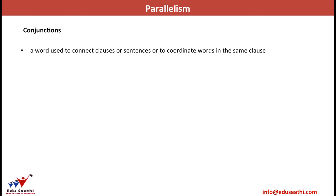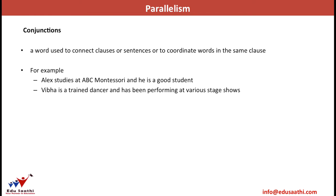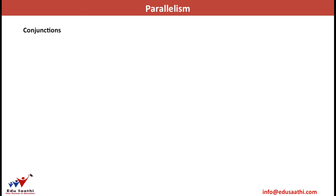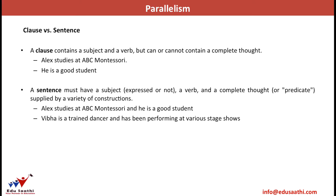Now we discuss the concept of conjunctions. A word used to connect clauses to form a sentence is known as a conjunction. In the sentence 'Alex studies at ABC Montessori and he is a good student,' the word 'and' joins the two clauses. Such words used to join two clauses are known as conjunctions.